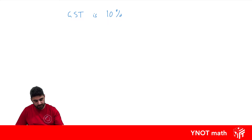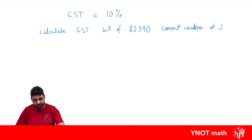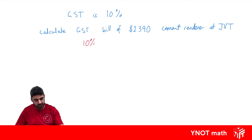Let's look at an example. We want to calculate the GST payable on a bill of $2,390. This is before GST gets added onto the bill from a cement renderer at JVT Rendering. To find the GST, all we need to do is find 10% of this bill. So it's 10% over 100 times 2,390, and that gives us $239.